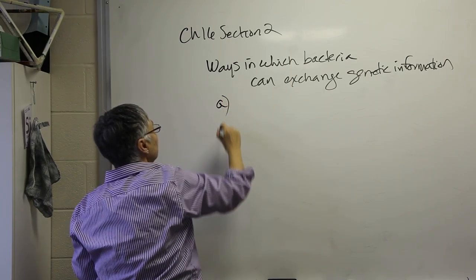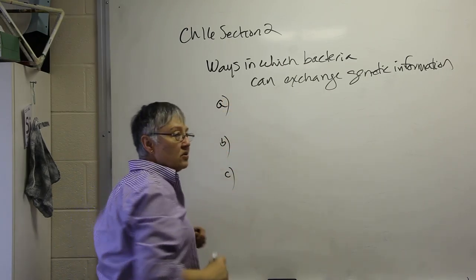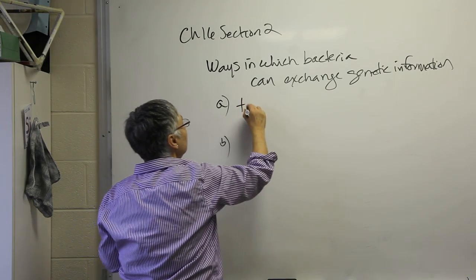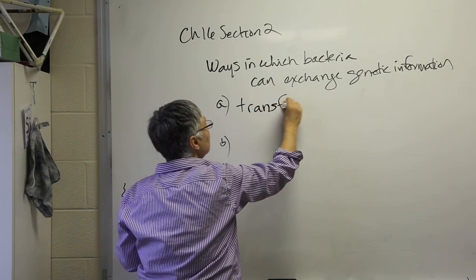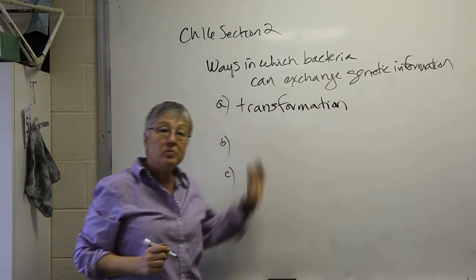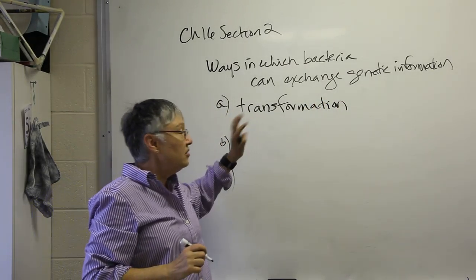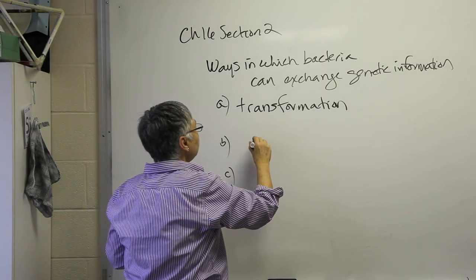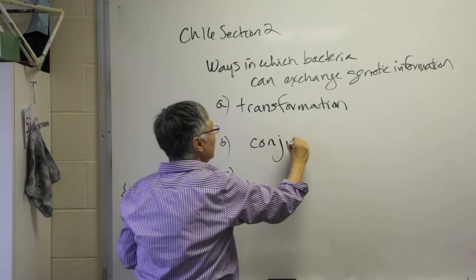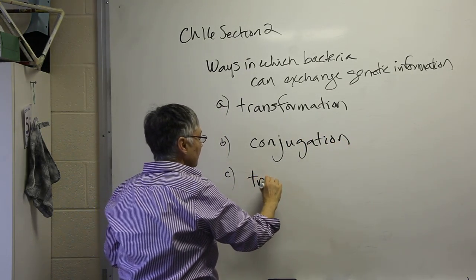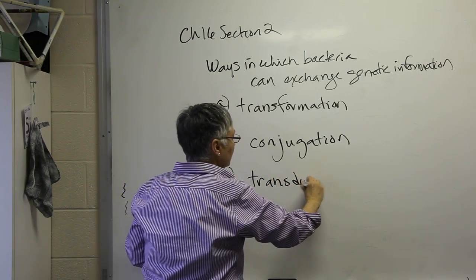So these are ways in which bacteria can exchange genetic information. And the three mechanisms, or three ways in which they do that, include transformation. So I'm going to write the terms down first, and then I'll talk about each in turn. Transformation, conjugation, and lastly, transduction.